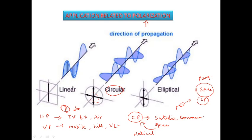By varying the different types of polarization, antenna applications are also varied — so antenna polarization is a very important antenna parameter. In simple terms, it is the orientation or direction of the electric field component that defines polarization, and it is directly linked to the antenna's physical orientation. If the antenna is placed vertically, it is a vertically polarized antenna; if placed horizontally, it is a horizontally polarized antenna.